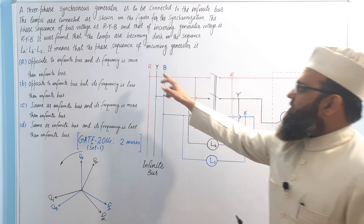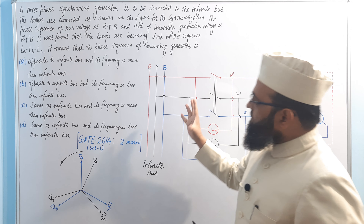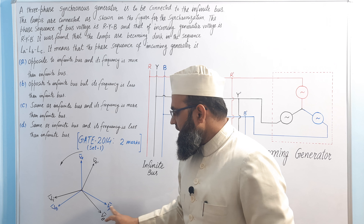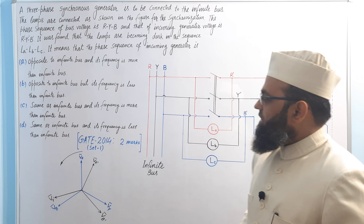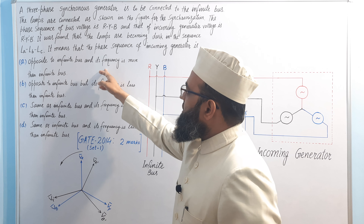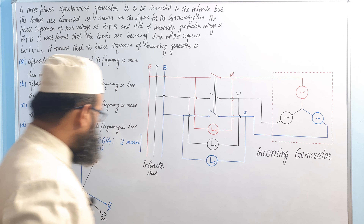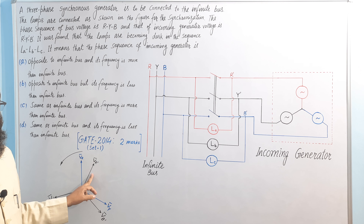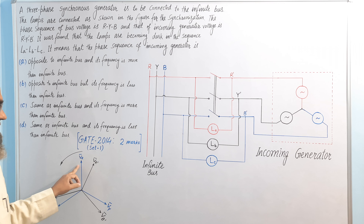The RYB representation has been used for the infinite bus, so the three phase voltages Vr, Vy, Vb are rotating in anti-clockwise direction. Let us assume option one is correct — that is, the frequency of the incoming generator is more than the infinite bus. In that case, this phasor will rotate at a higher frequency, so its speed of rotation will be higher.